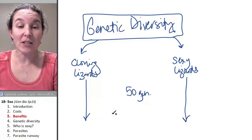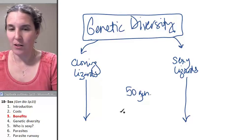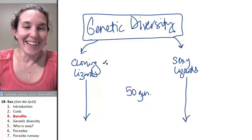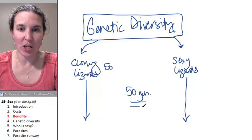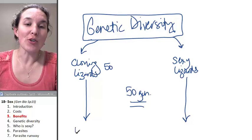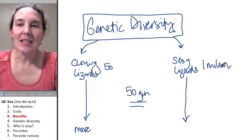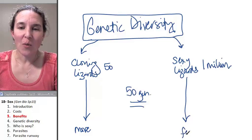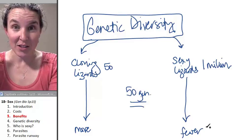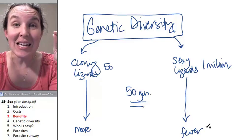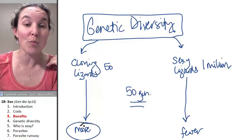And the cloning lizards, I always forget my numbers. Are you ready for this? Dude, if there were only 50 cloning lizards that reproduced for 50 generations, they produce more babies than one million sexy lizards. What? Did you understand what that was? You take 50 cloning lizards, and you take one million sexually reproducing lizards, and at the end of 50 generations, the cloning lizards will have produced more babies.